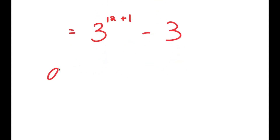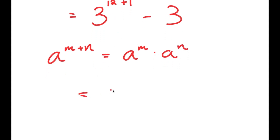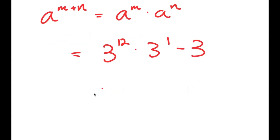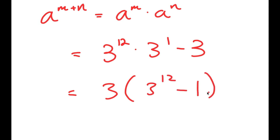Now if I have something in the form a to the power of m plus n, this is equal to a to the power of m times a to the power of n. So I get 3 to the power of 12 times 3 to the power of 1 minus 3. And from here, I can factor out 3, so I get 3 times 3 to the power of 12 minus 1.